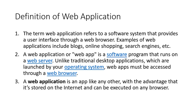The first definition of web application: the term 'web application' refers to a software system that provides a user interface through a web browser — an application which we can access through a web browser. Examples of web applications include blogs, online shopping systems, search engines like Google, OLX, and Daraz and so on.